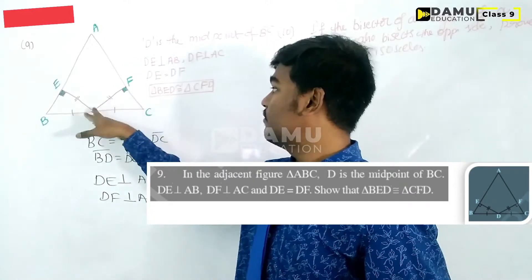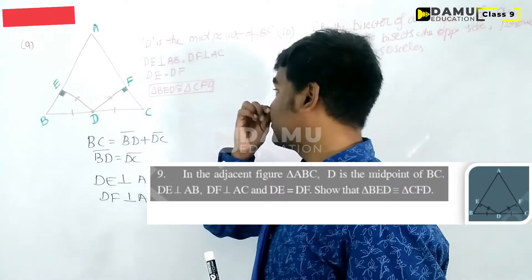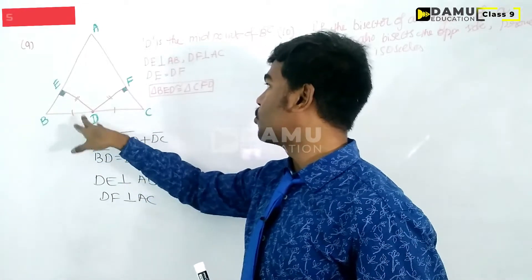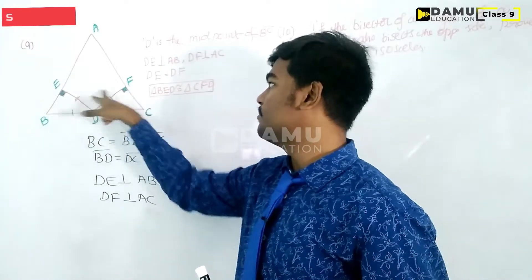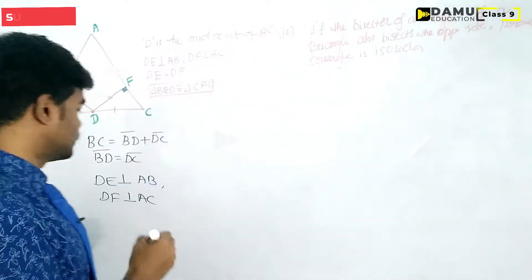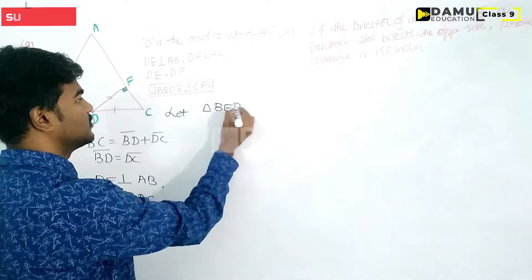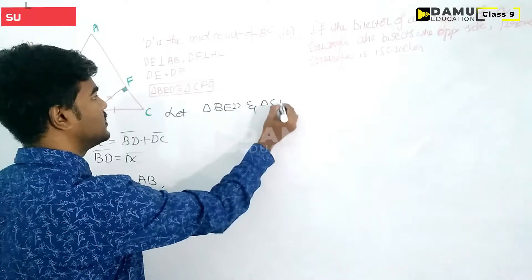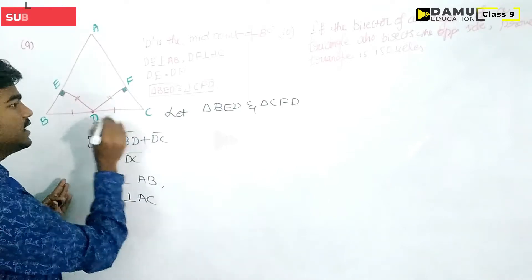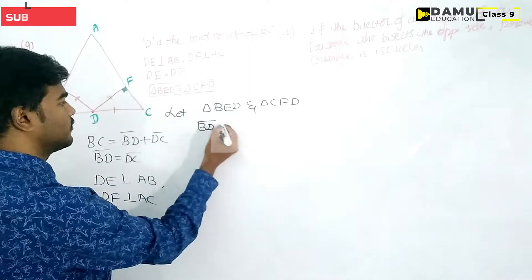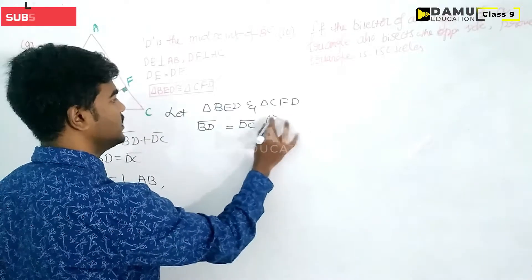We are also given that DE equals DF. Now we have to show that triangle BED is congruent to triangle CFD. Let us consider triangle BED and triangle CFD and check the given conditions. First, BD equals DC since D is the midpoint.